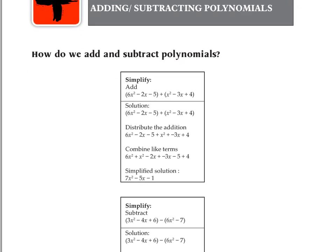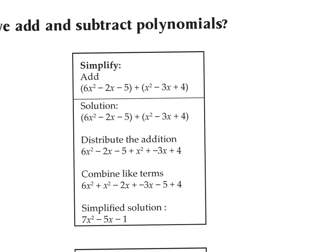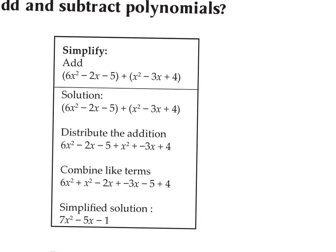It's really not as complicated as it looks. In this first example, we have a trinomial — which, if you remember from the last lesson, means it has three terms — added to another trinomial, which also has three terms. To add two polynomials together, and it really doesn't matter how many terms they have, all you have to do is drop the parentheses and combine like terms.